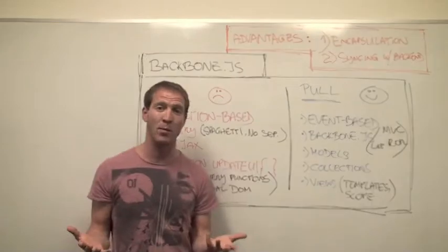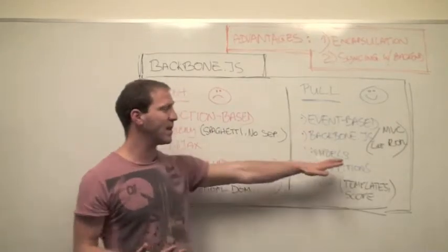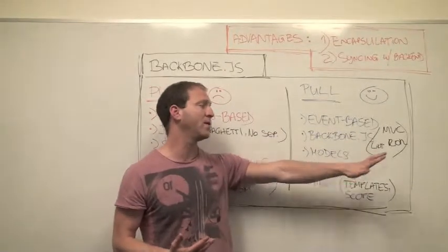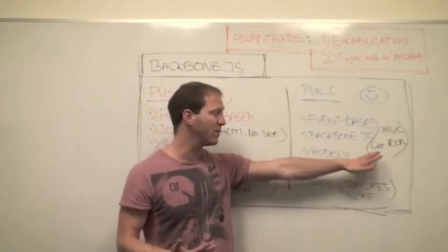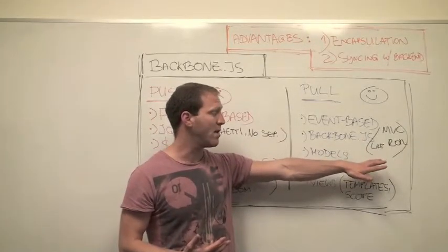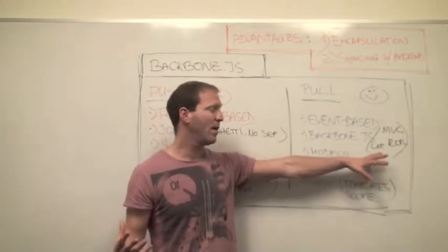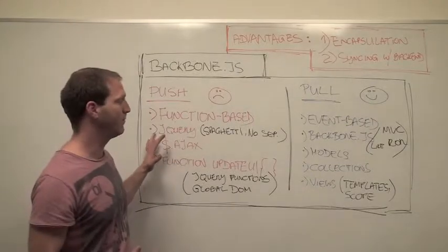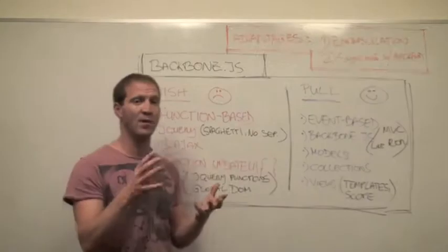So why did Backbone come about? It came about for the same reason frameworks like Ruby on Rails, ASP.NET MVC with Microsoft.NET, and Django and Python came about. And that's what people noticed, if you just write ad-hoc code, it's very hard to keep organized.